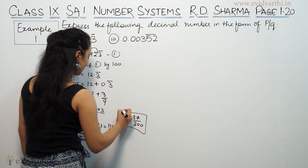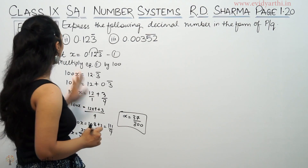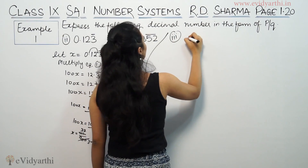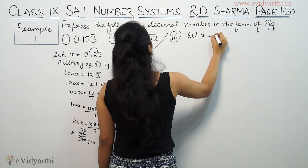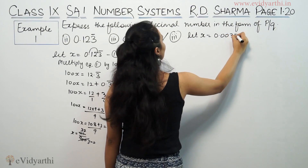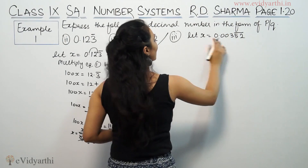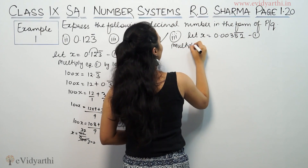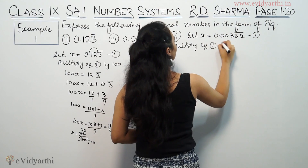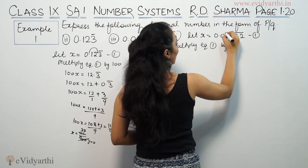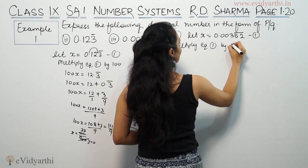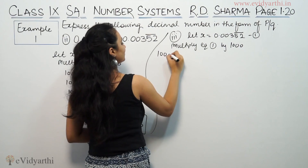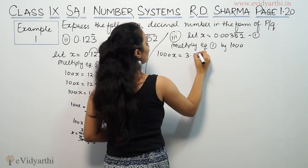Now for part three, let's make x equal to 0.00352 bar. We will multiply this equation by 1000, counting 1, 2, 3 places, so 1000x is equal to 3.52 bar.